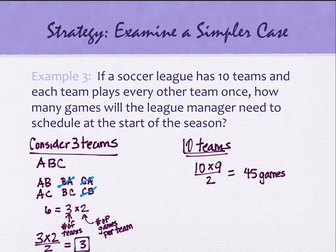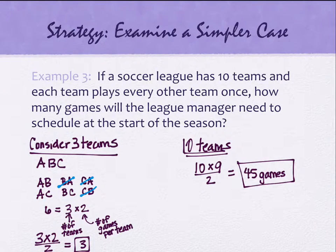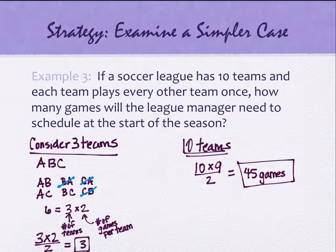There is context to these problems, so there are units on all my answers: 45 games. And if you weren't sure where the six came from with three teams and wanted to verify the process, you could do it for four teams — write out A, B, C, D, pair them all up, and see if you can notice a pattern. If one example isn't enough to see what's happening in general, try a couple of examples to figure out the pattern.